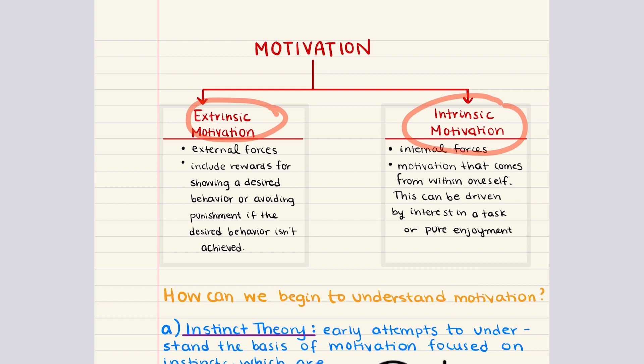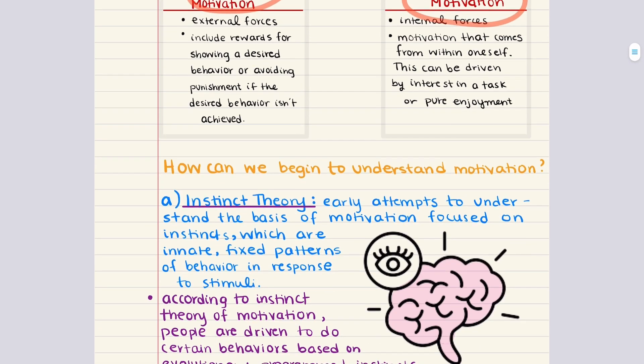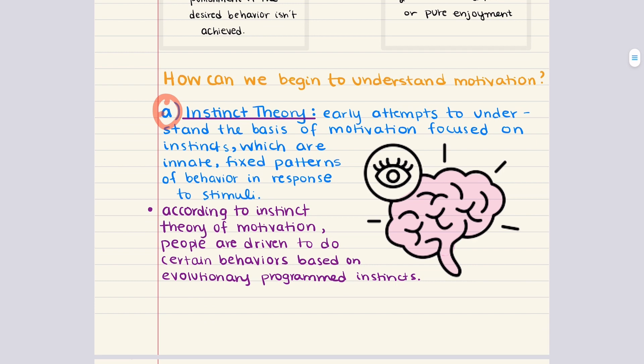The primary views of motivation include instincts that elicit natural behavior, the desire to maintain optimal levels of arousal, the drive to reduce uncomfortable states, and the goal of satisfying both physiological and psychological needs. We can begin to understand motivation through a couple of theories, starting off with instinct theory.